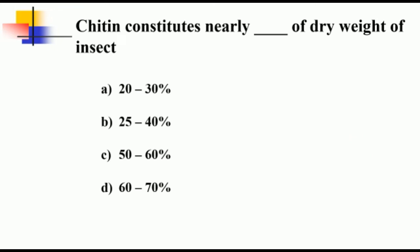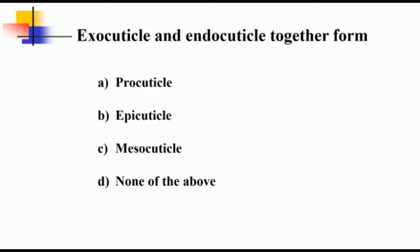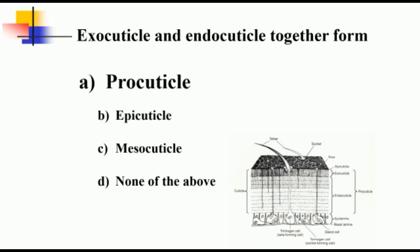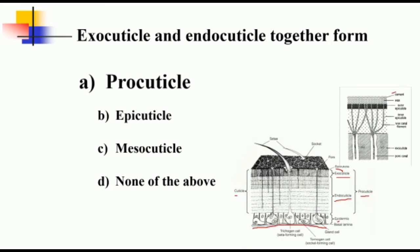Chitin constitutes nearly 25 to 40 percent of dry weight of insect. Exocuticle and endocuticle together form procuticle. When we look at the insect integument, it is made up of parts like cuticle and epidermis. Epidermis is a unicellular layer resting on the basement membrane having functions like cuticle secretion, wound repairing, digestion and absorption of the old cuticle, and gives surface look. Cuticle is divided into epicuticle and procuticle. Procuticle in turn is subdivided into exocuticle and endocuticle. Epicuticle is made up of five layers: cement layer, cuticulin layer, wax layer, outer epicuticle, and inner epicuticle.